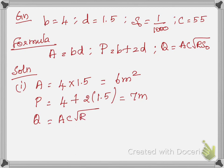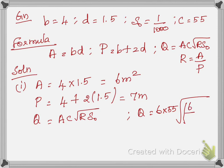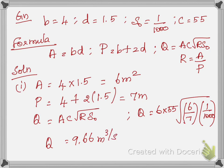Next, discharge Q = A × C × √(R × S₀), where R = A/P. Substituting: Q = 6 × 55 × √((6/7) × (1/1000)). Calculating this gives Q = 9.66 m³/s. So Part 1 is complete — the discharge for the initial rectangular channel is 9.66 m³/s.